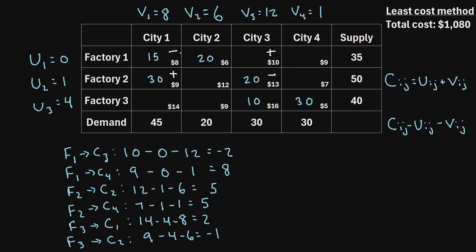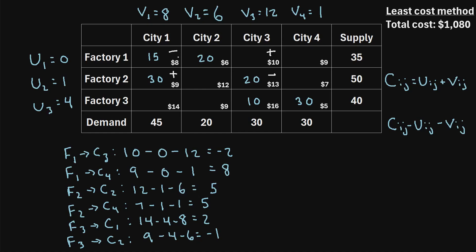We look only at the cells with minus signs and find which one has the lower value of shipped units. This cell shipped 15 units and the other shipped 20 units, so 15 is the lesser value. For cells with a minus sign, we subtract 15: one cell becomes 0 and the other becomes 5 (20 minus 15). For cells with a plus sign, we add 15: one cell goes from 0 to 15, and the other goes from 30 to 45. These are our new allocations. We will now recalculate the u and v values to check for any remaining negative values.